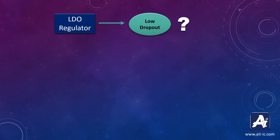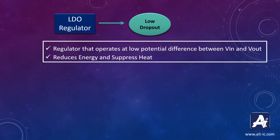LDO stands for Low Dropout Voltage. Low Dropout means a device that can operate at a low potential difference between input and output, which ultimately reduces energy loss and suppresses heat generation in the device.